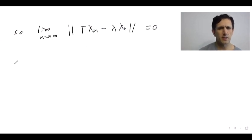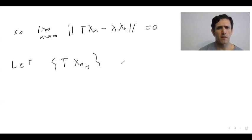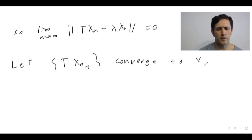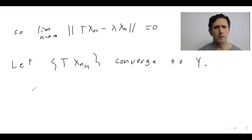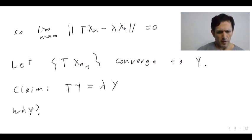So now let's use compactness. T is compact, so we can pick a subsequence XNK, where the XN's have norm one, such that T(XNK) is convergent. Let's say T(XNK) converges to Y. I claim that lambda Y equals TY.